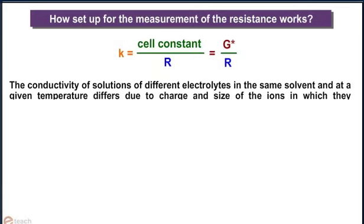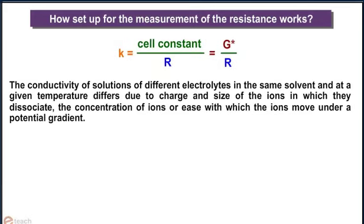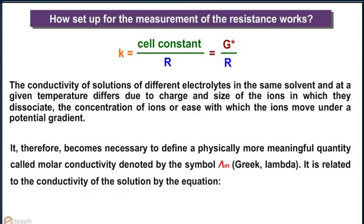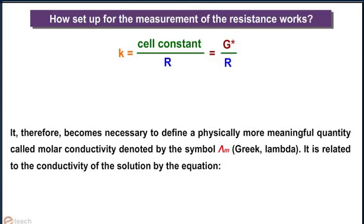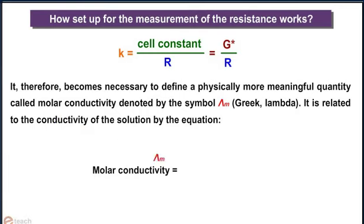The conductivity of solutions of different electrolytes in the same solvent and at a given temperature differs due to charge and size of the ions in which they dissociate, the concentration of ions, or ease with which the ions move under a potential gradient. It therefore becomes necessary to define a physically more meaningful quantity called molar conductivity, denoted by the symbol λM. It is related to the conductivity of the solution by the equation: molar conductivity = λM = κ/C.